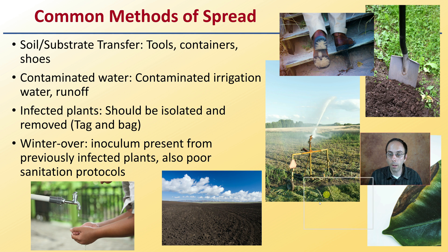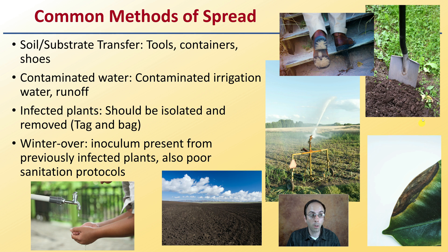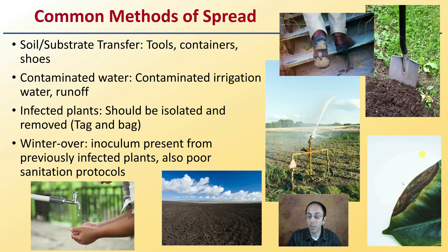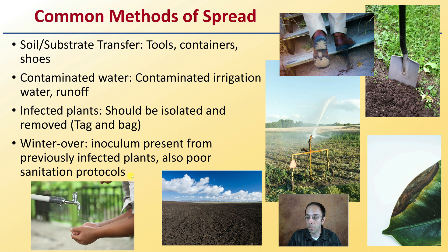Common methods of spreading include soil substrate transfer via tools, containers, or even shoes, which can transfer pythium from one field to another. Contaminated irrigation water or runoff can also cause it to spread. Infected plants should be isolated, removed, tagged, and bagged to prevent spread to healthy neighboring plants. Winter-over inoculum present from previously infected plants and poor sanitation protocols — particularly in indoor growing operations — are also concerns.